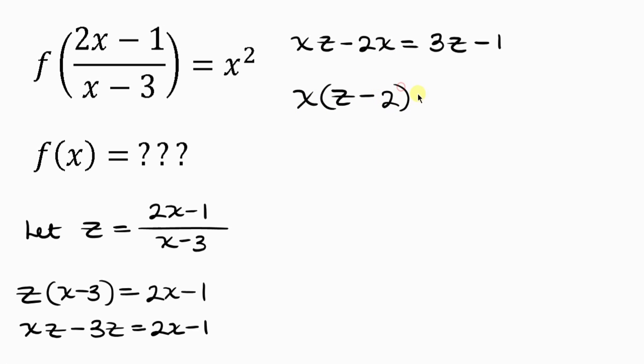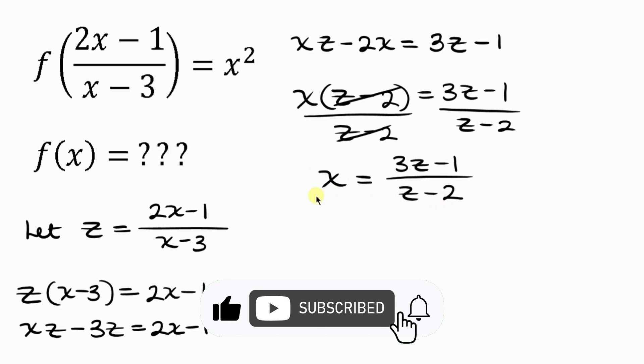Now our next step will be to divide both sides by z minus 2. So divide the left hand side by z minus 2 and divide the right hand side by z minus 2. Now z minus 2 cancels out z minus 2, so that I have x remaining on the left to be equal to (3z-1)/(z-2).